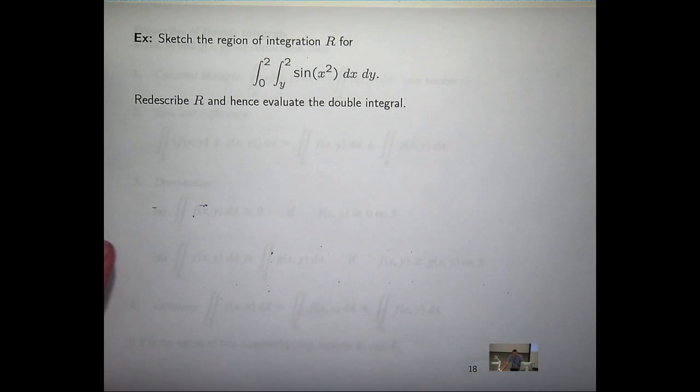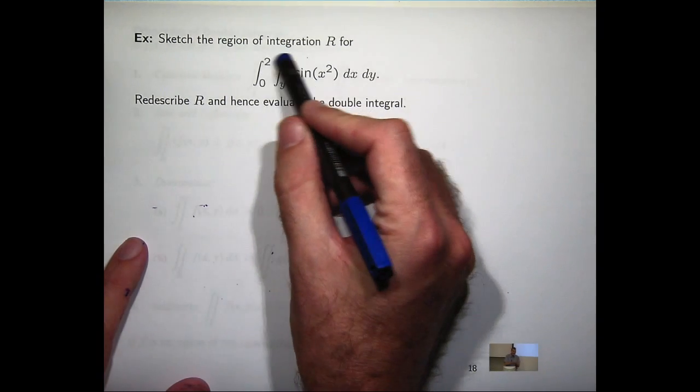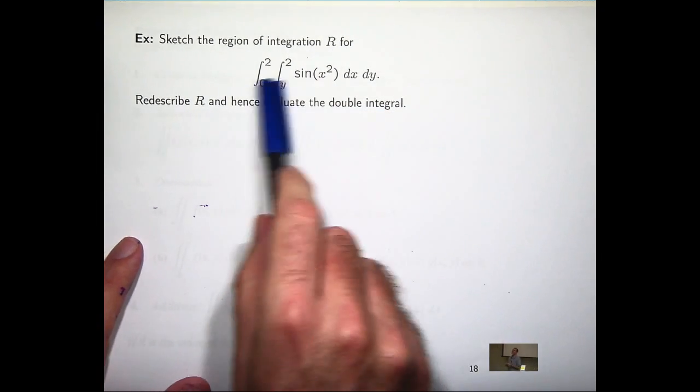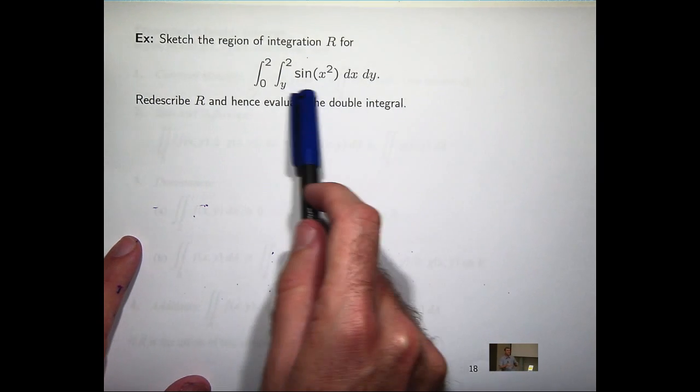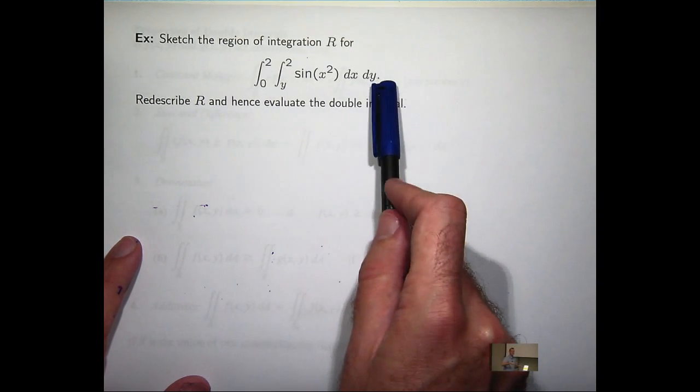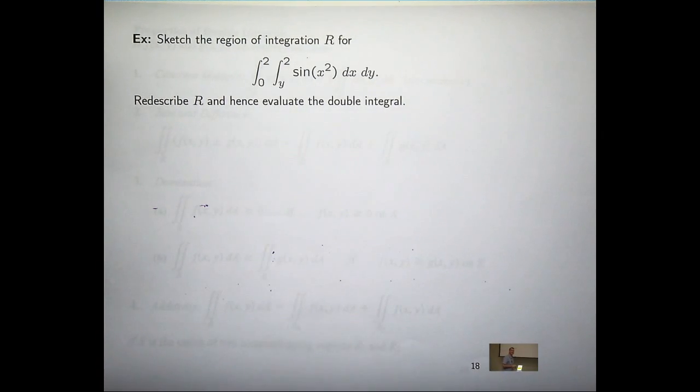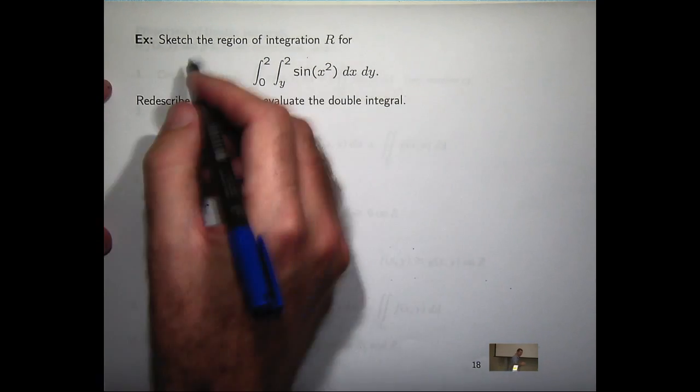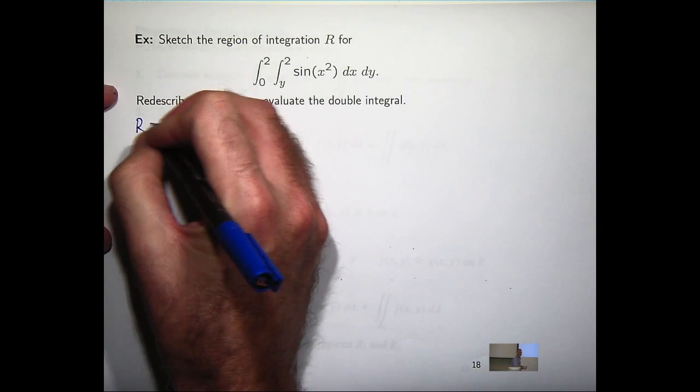So what we can do for this, we can take the region of integration just from these limits. So x will be between y and 2, and y will be between 0 and 2. Let's just write that down first. We're asked to sketch it and redescribe it.